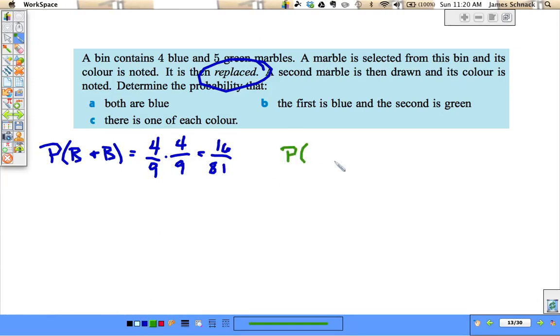Secondly, probability of blue and green. And when I say blue and green, I mean first blue, then second green. So blue then green. Probability of picking blue is four ninths, times the probability of picking green. But remember, the first marble is replaced, so there are five green in that bin and nine total. So this would be 20 out of 81.